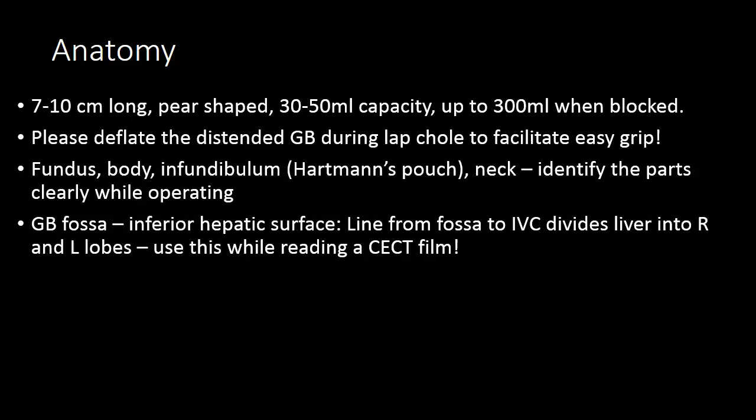The gallbladder is plastered to its fossa on the inferior hepatic surface, and a line from this fossa to the IVC divides the liver into right and left lobes. This can be used as a guideline while reading a CT scan film to divide the liver. In addition, the three hepatic veins divide the liver into different areas, and you can draw another transverse line, thus dividing the liver into eight different lobes. Both these points can be used while reading a CT scan to assess the area or extent of damage.